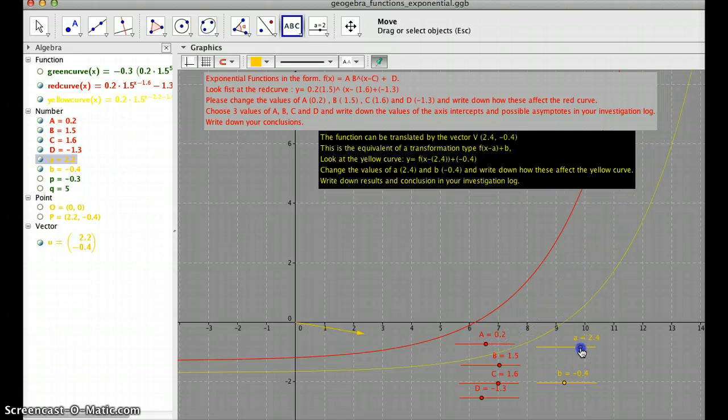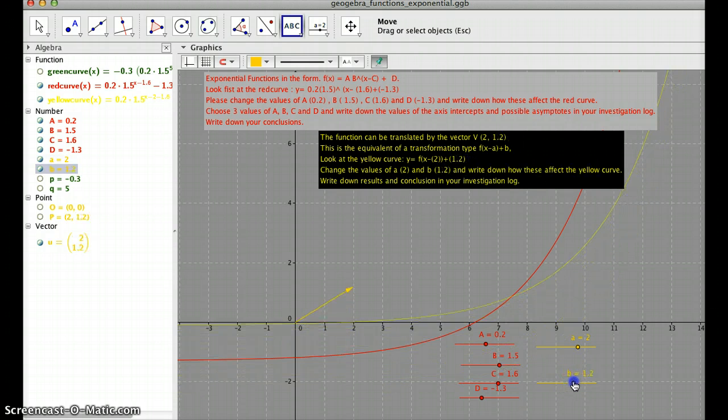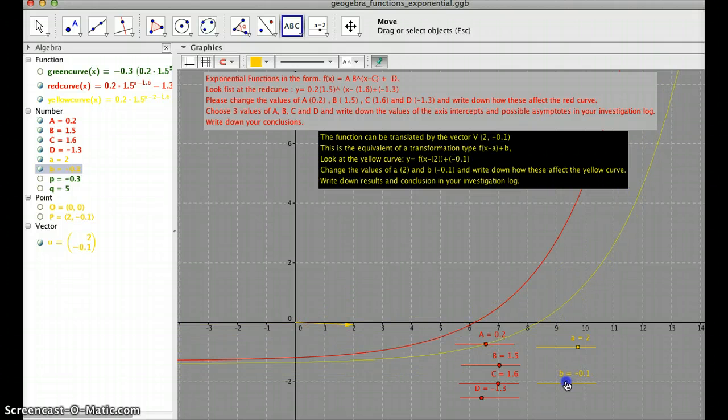So that's the x-coordinate of the vector. And obviously, the yellow curve moves right and left. b, same thing with this, up and down. We need to do three different values of each.